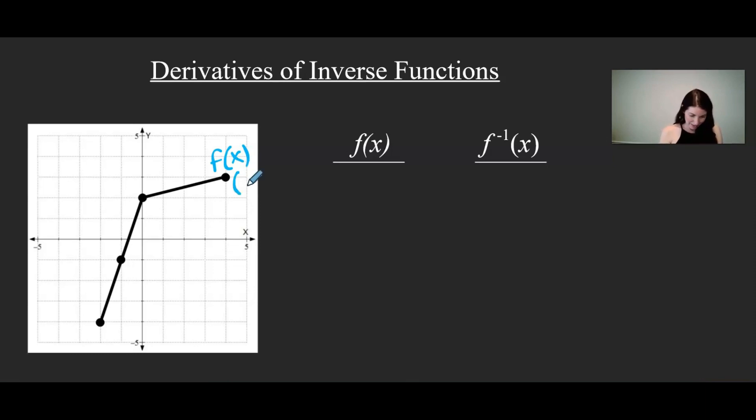So here we have the point, let's see, what is that at? 4, 3. Over here we've got the point 0, 2. Down here, negative 1, negative 1. And down here we've got the point negative 2, negative 4. So I'm going to graph those points on the inverse function.